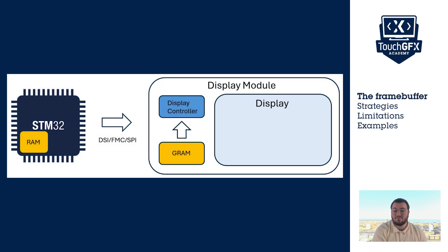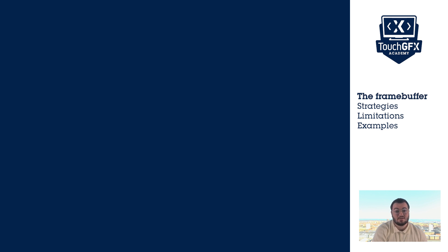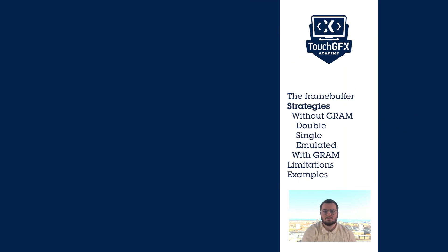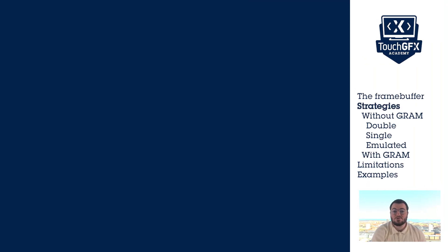The last thing to know before discussing framebuffer strategies is that some displays embed static memory where the current content of the display is stored. This memory is called GRAM and it allows the MCU to be idle if nothing has changed. Otherwise, we have to keep sending the image even if nothing changed. Choosing the right framebuffer strategy is important to maximize performance within the limitations of your hardware.